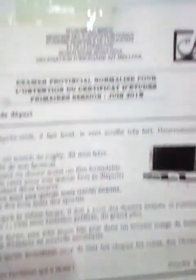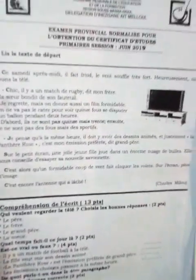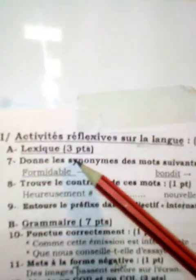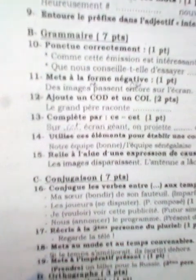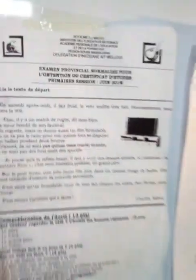Comme vous pouvez voir, c'est un normalisé qui a été fait dans la session de juin 2019 pour le niveau de sixième année. Ce qui nous intéresse pour le niveau de CM2 et CM1, c'est avoir un texte avec les questions de compréhension. Ensuite, on va passer aux activités de langue, où il y a le lexique, la grammaire, la conjugaison, l'orthographe. Et bien sûr, à la fin, il y a la production écrite qui contient deux exercices. Nous allons faire la lecture de ce texte ensemble.